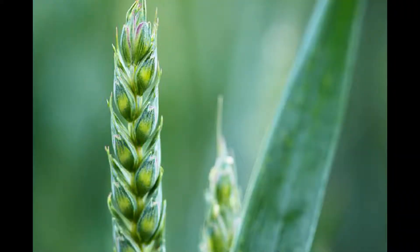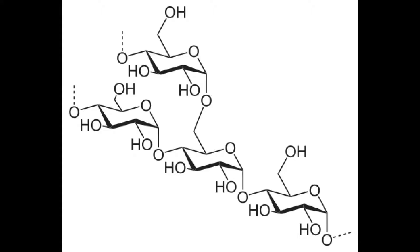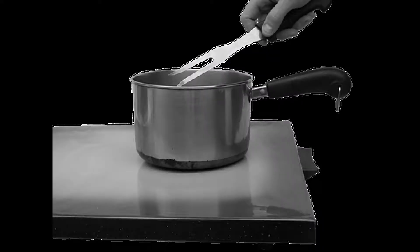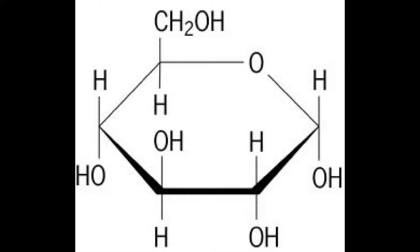Glucose is made in most plants that photosynthesise. These glucose molecules are normally formed into a chain for storage in plants. In other species like humans, the glucose is formed into chains called glycogen. When heated or eaten, the chemical bonds that form this chain are broken, freeing individual glucose molecules.